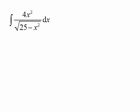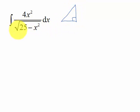Here we have the integral of 4x squared over the square root of 25 minus x squared. Looking at this, I'm going to draw a triangle and label the sides such that I end up with one of the sides being the square root of 25 minus x squared.